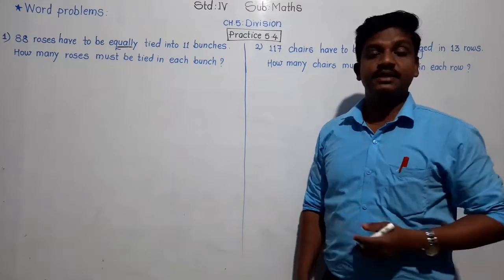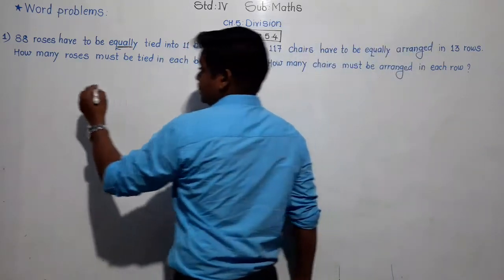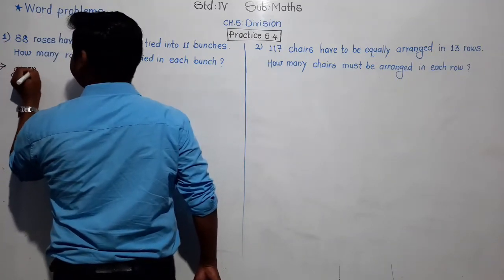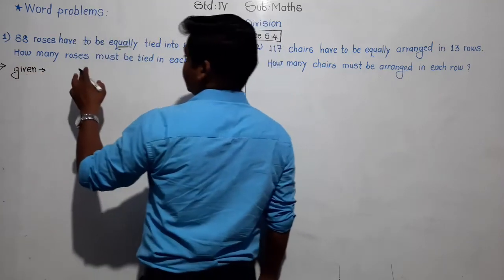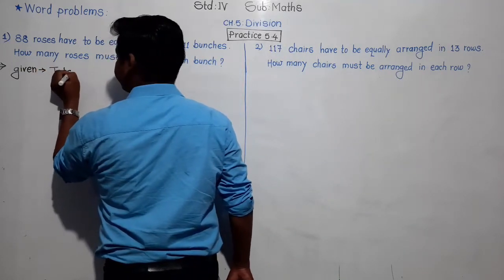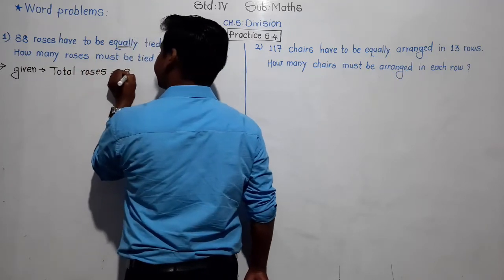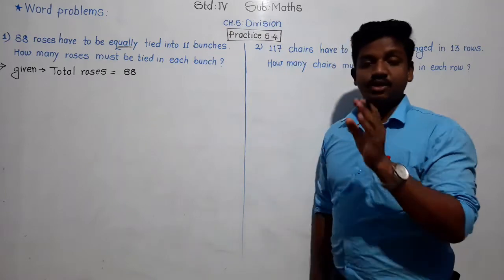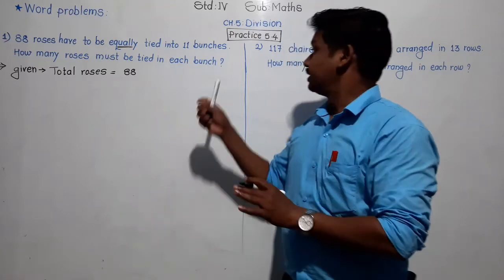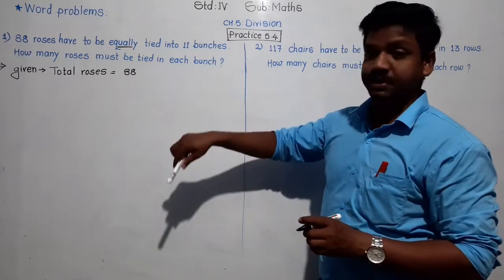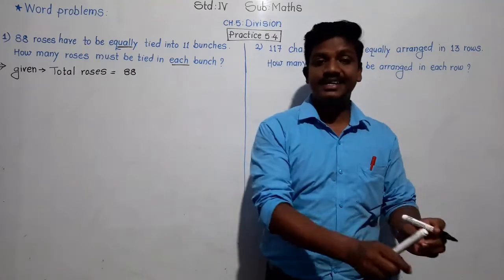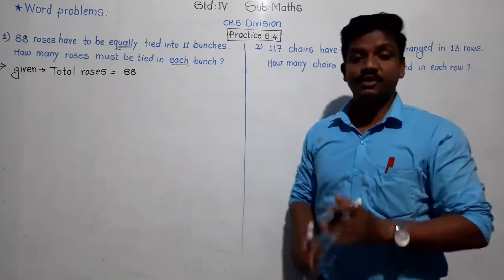Another hint by which you can recognize that we have to do division: what is given? Total roses — 88 roses are given. And those total roses we have to divide or tie into equal bunches of 11 roses. So in each bunch, the word 'each' is also a hint word. We have to find how many roses will be there in each bunch — that is what we have to find.